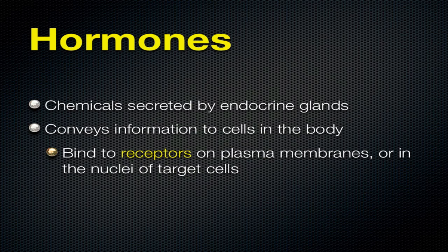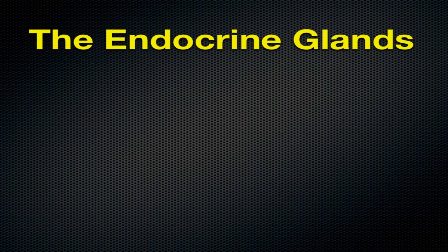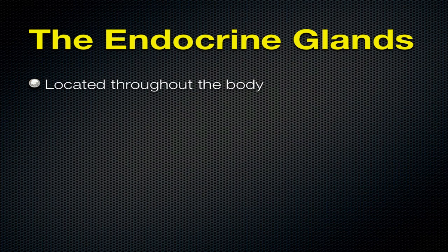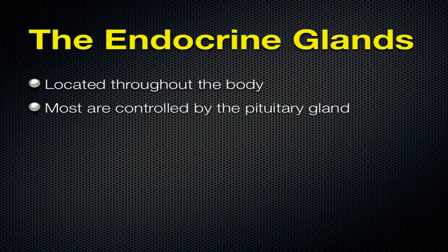Nuclei is the plural of nucleus - so if you have more than one nucleus, you call them nuclei. So the hormones can either bind to receptors on the plasma membrane, or they can bind to receptors in the nuclei of the target cells. These endocrine glands are located throughout the body, and most of them are controlled by the pituitary gland.